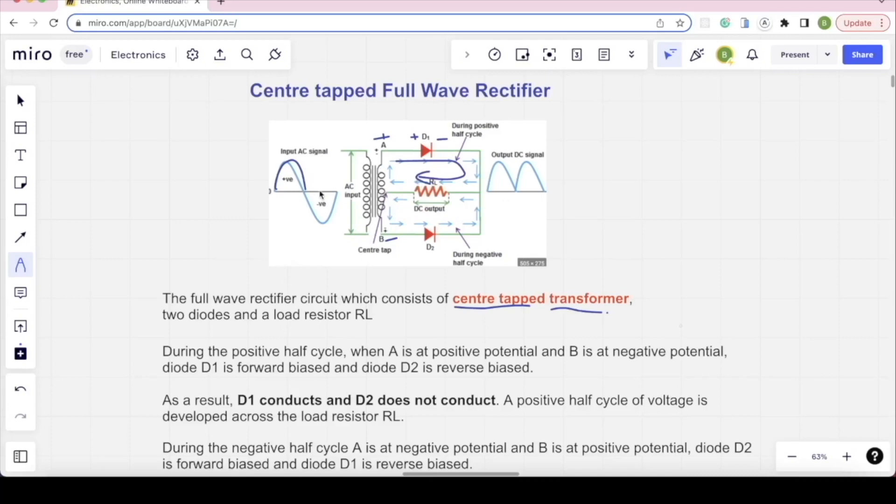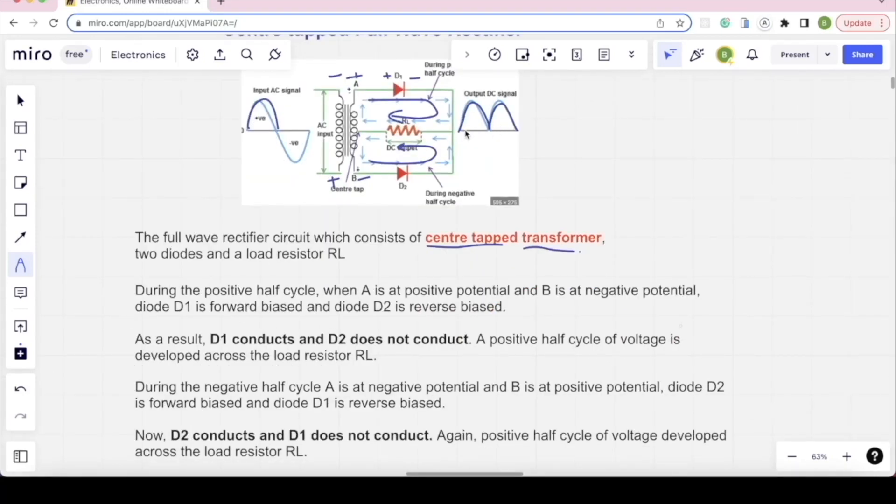For negative half-cycle, A-point is negative, B-positive. This is the current flow. You can see the current flow throughout the whole cycle. Load resistance current flows unidirectionally. From this, output comes positive. It's a full-wave rectifier. Positive and negative cycle, this will be the output.